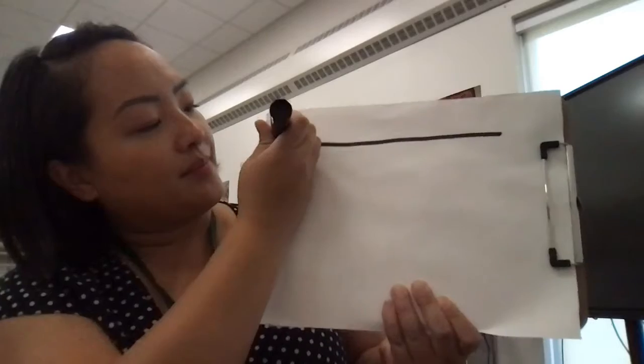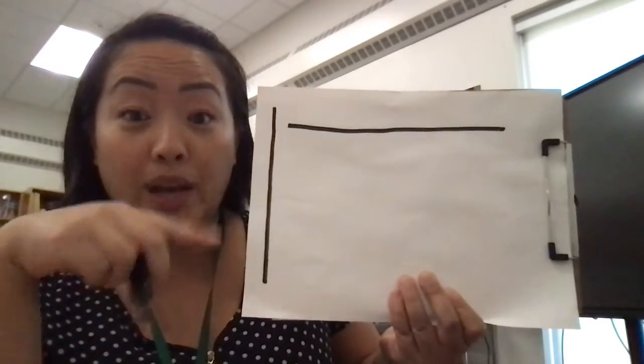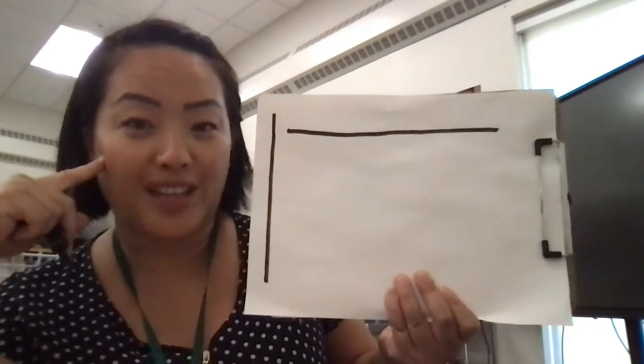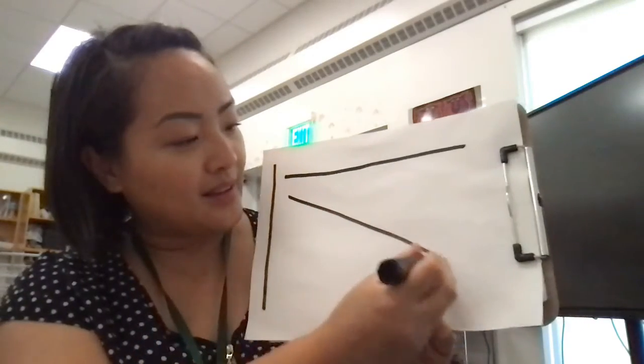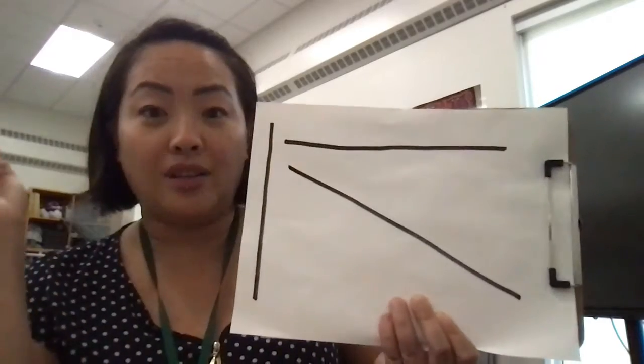Look at this line. This line is going up and down. We call that a vertical line. And now look at this line. That line is going diagonal, but they're all straight lines.